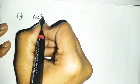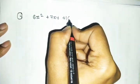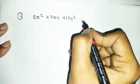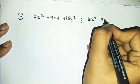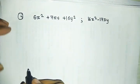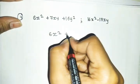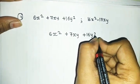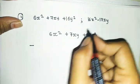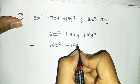Example number 4: the first expression is 6x² plus 7xy plus 16y². The second expression is 16x² minus 17xy. We write the expressions vertically: 6x² plus 7xy plus 16y², and below it to subtract: 16x² minus 17xy.